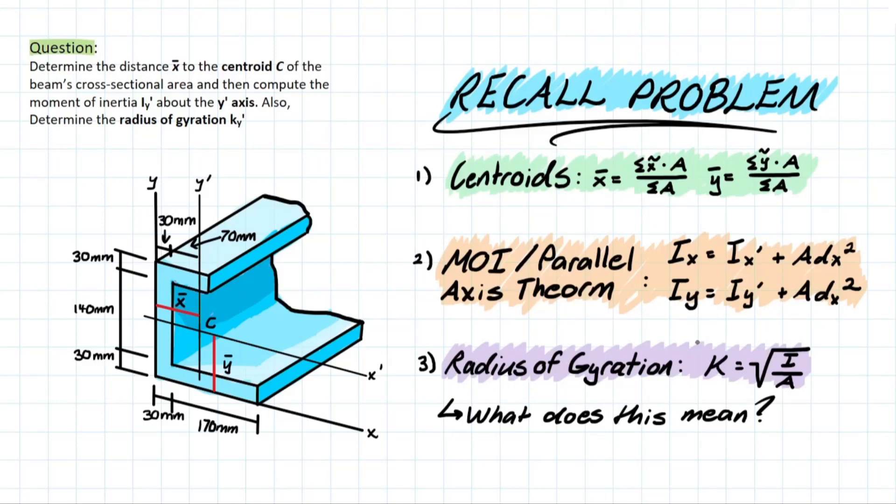It's also named something similar as well. It's called radius of gyration in dynamics as well. However, the formula they use is k equals the square root of i, which is the moment of inertia, over mass.